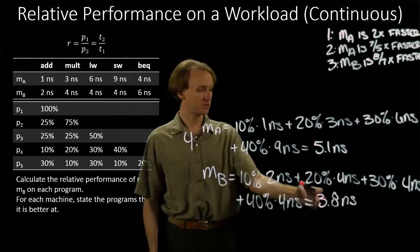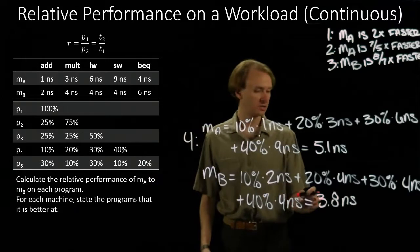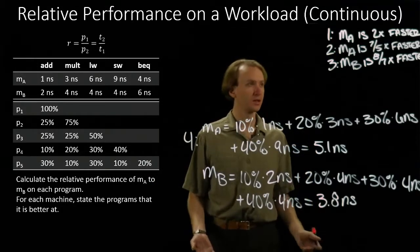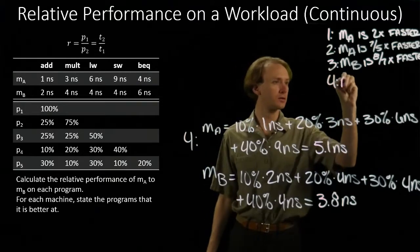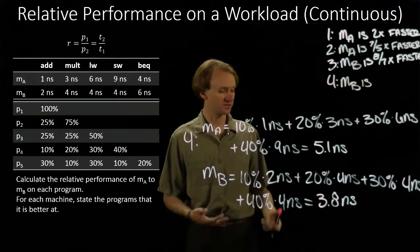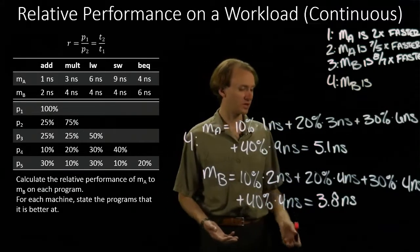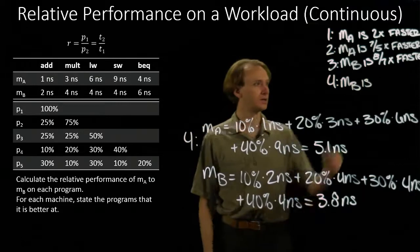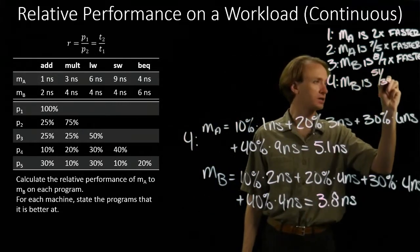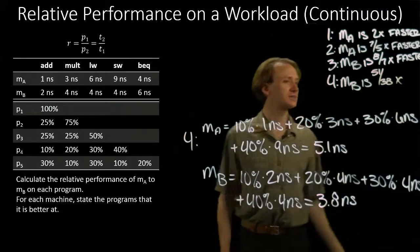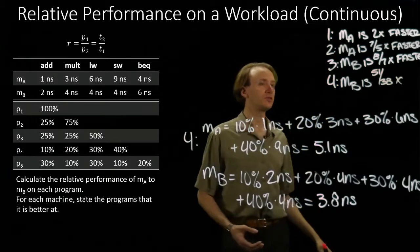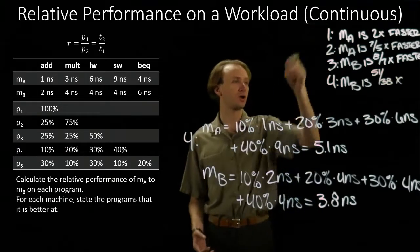So machine B is again faster than machine A — 3.8 nanoseconds average is clearly less than 5.1. The ratio is 51 over 38 times faster for machine B. Still an improvement, better than program 3, but not yet up to two times faster.